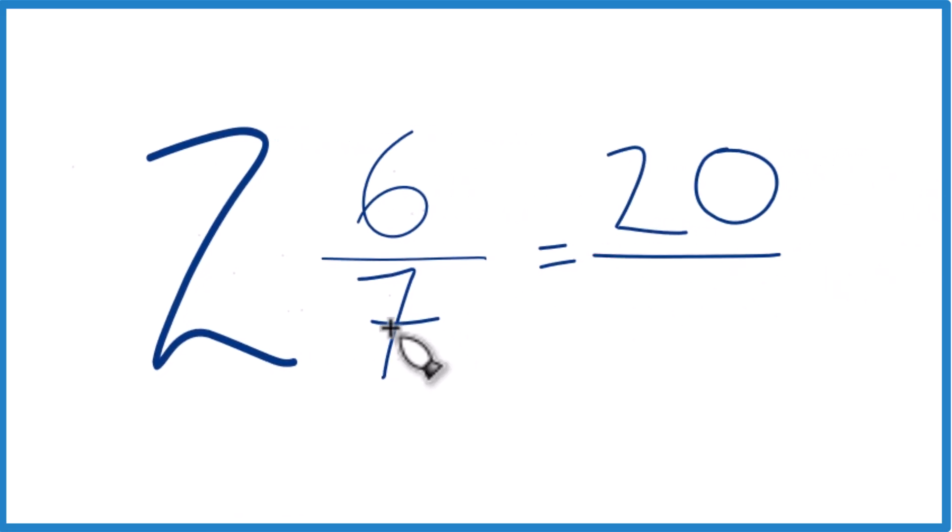Then you just bring this denominator across here, and the mixed number 2 and 6 sevenths, that equals the improper fraction, 20 sevenths.